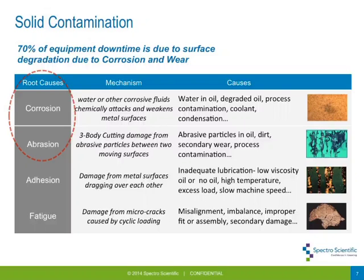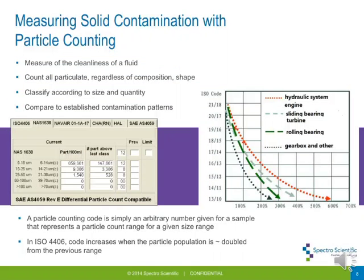If you look around the industry, many OEMs and service companies, major mining equipment customers, and turbine companies operate contamination control programs focused on controlling the level of solid contamination getting into the system. One of the overarching measurement approaches when talking about solid contamination is particle counting. Particle counting has been around for almost 40 to 50 years, originally aimed at hydraulic cleanliness. It's a measure of the overall cleanliness of a fluid — measuring all the particles regardless of composition and shape, binning them according to size and quantity.